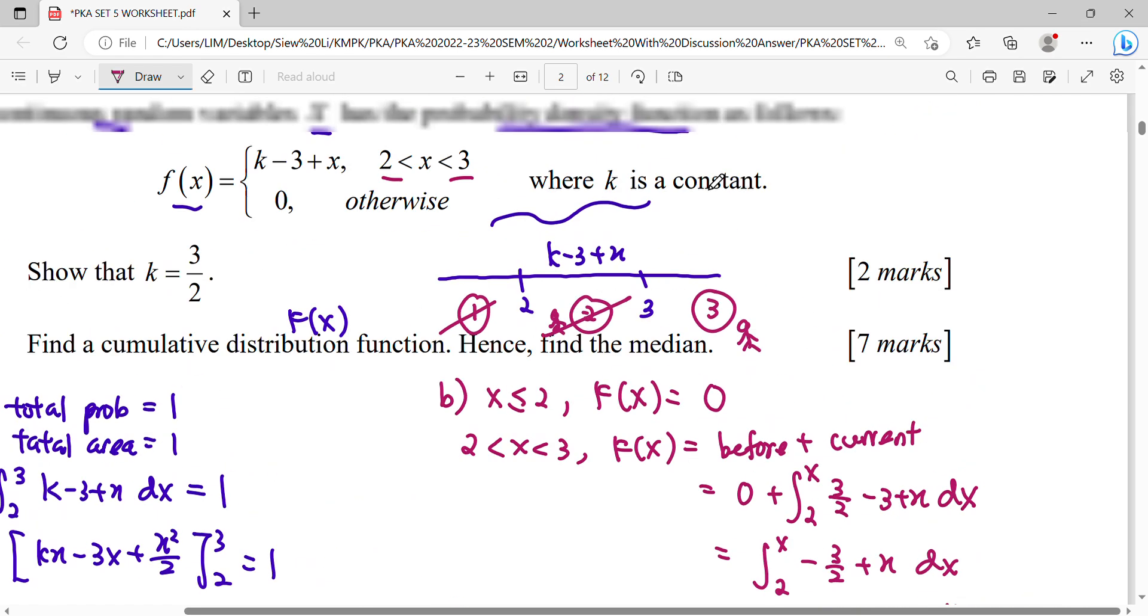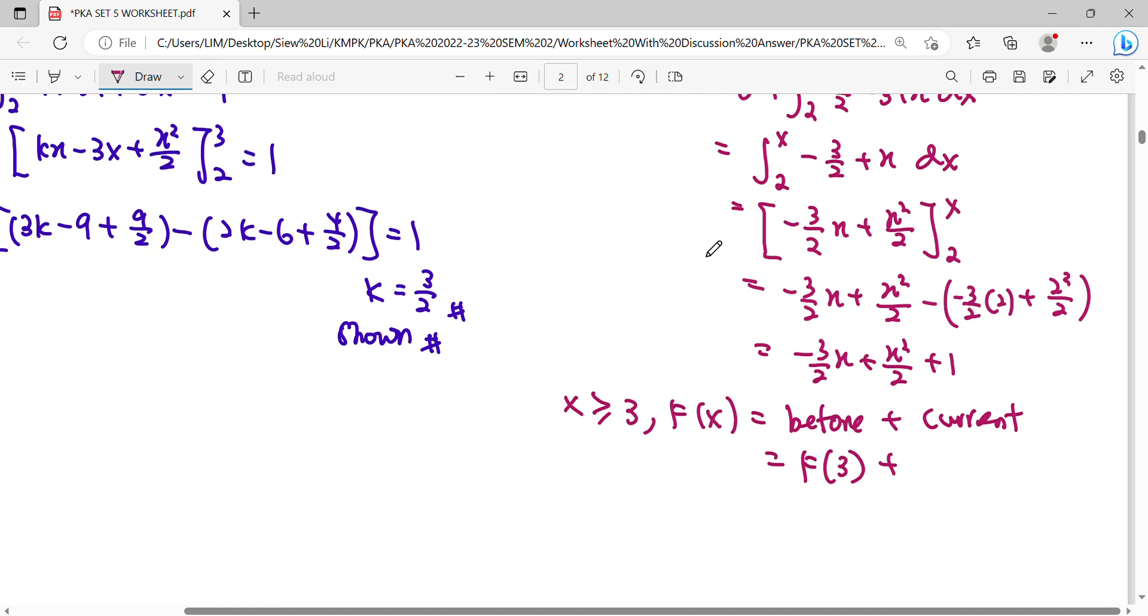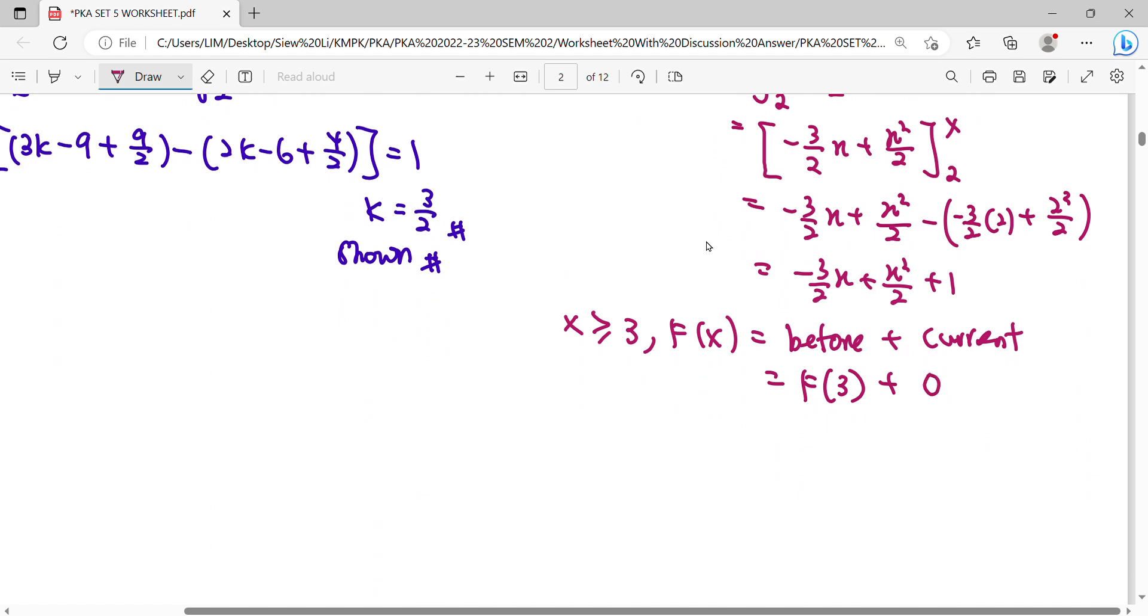Currently we don't have any function here. Means currently we don't have any area, any probability here. So currently 0. So F-3, we find F accumulate as maximus in it. Before that, substitute your X is 3. So we get 1.